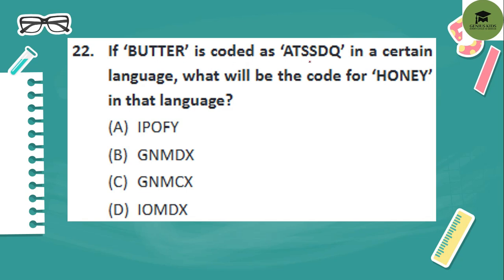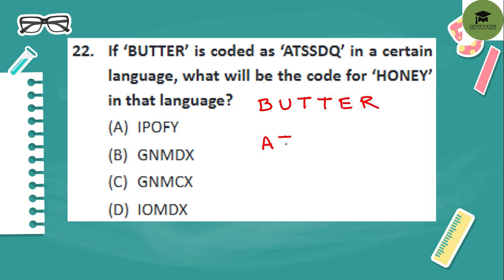If Butter is coded as A, T, S, S, D, Q in a certain language, what will be the code for Honey in that language? So Butter is written as A, T, S, S, T, Q.